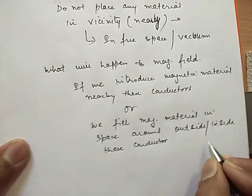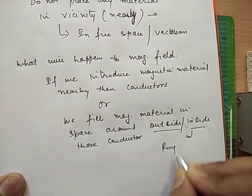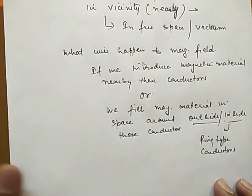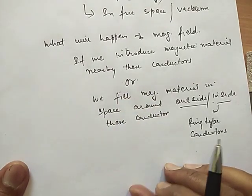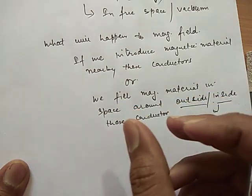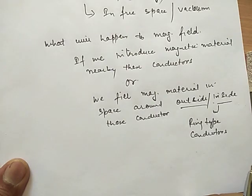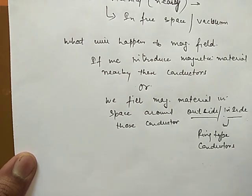We fill the inside of ring type conductors - that is, it may be solenoid or a toroid. Now what will happen actually when material medium is placed nearby this conductor or we fill that toroid or solenoid with magnetic material? First thing is the magnetic field gets modified.